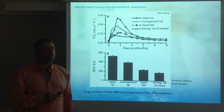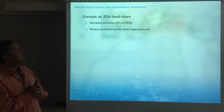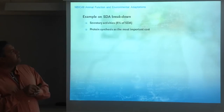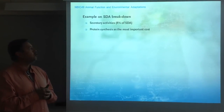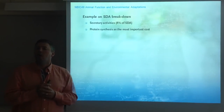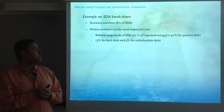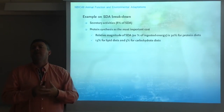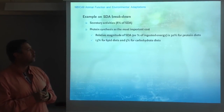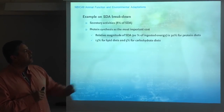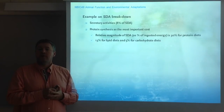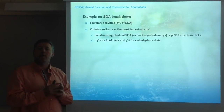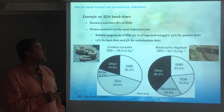Looking at a breakdown of the SDA, secretory activities account for about 8% of the SDA — those are preabsorptive costs. Protein synthesis seems to be the most important cost in SDA, which is a postabsorptive cost. We know this because animals eating protein diets show a larger SDA; for lipid diets it's down to about 30%, and only 5% for carbohydrate diets. Essentially, carbohydrates are easier to digest and absorb compared to proteins. So depending on the composition of what the animal is eating, the SDA may be very different in amplitude.